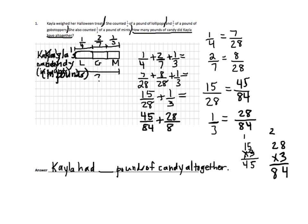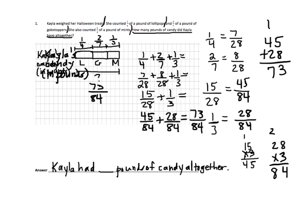Forty-five eighty-fourths plus twenty-eight eighty-fourths is going to equal some number of eighty-fourths, because the denominator just names the unit when we're adding or subtracting numbers. Let me add the numbers up off to the side: forty-five plus twenty-eight is equal to seventy-three. So from here to here is seventy-three eighty-fourths of a pound. That is how much candy Kayla has altogether. Kayla has seventy-three eighty-fourths pounds of candy altogether.